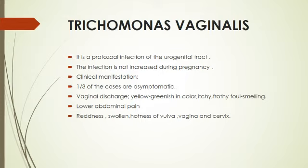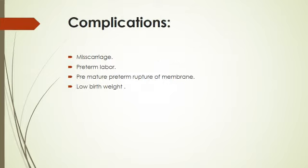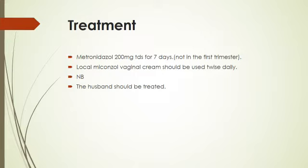Trichomoniasis: one-third of patients are asymptomatic. Vaginal discharge is yellow-greenish in color, itchy, frothy, and foul smelling. Lower abdominal pain, redness, swelling, and hotness of the vulva, vagina, and cervix may be present. Diagnosis: vaginal discharge can be examined directly for trichomonas, and urethral discharge if urethritis is present; culture if direct microscopy is negative. Complications include miscarriage, preterm labor, premature rupture of membranes, and low birth weight. Treatment: metronidazole 200 mg three times a day for seven days, not in the first trimester. Local metronidazole vaginal pessary should be used twice daily. The husband should also be treated.